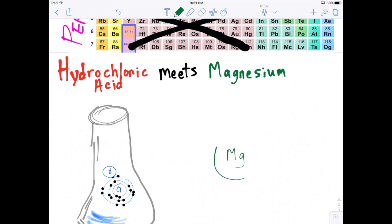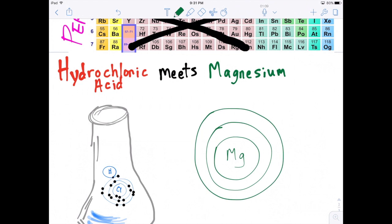Three shells, and they fill up as two in the first, eight in the second — eight makes the second shell full — and two in the last shell.